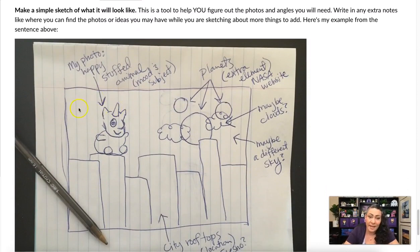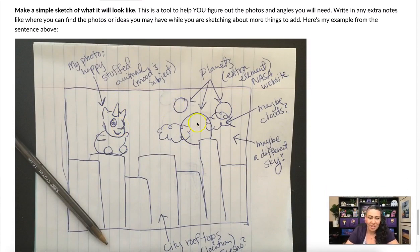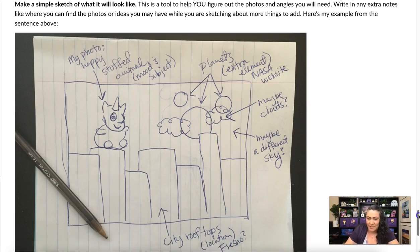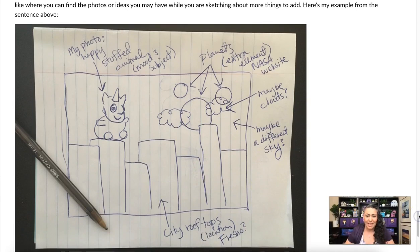Here's my simple sketch — a happy stuffed animal (my mood and subject) looking at some planets over here, with the location being city rooftops. Now I have a clear idea of what I need to photograph. The next step — how to actually go about photographing the composite — will be covered in the next lecture.